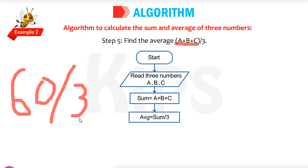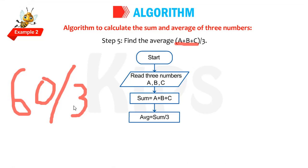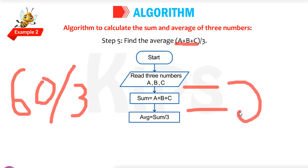Before coming to computer class, especially these classes, just refresh your knowledge of basic mathematics. So 60 divided by 3 — what is the answer? 20. So the average is 20.